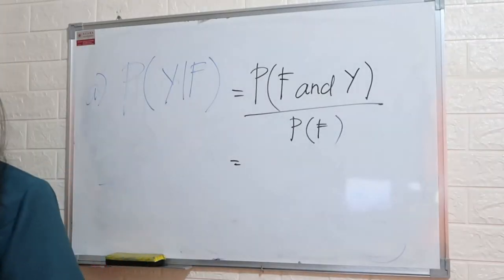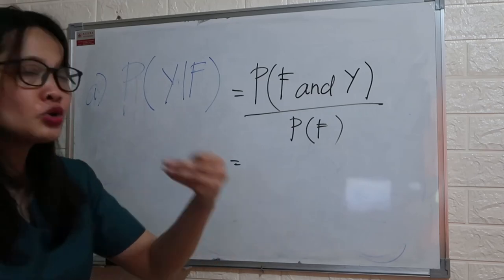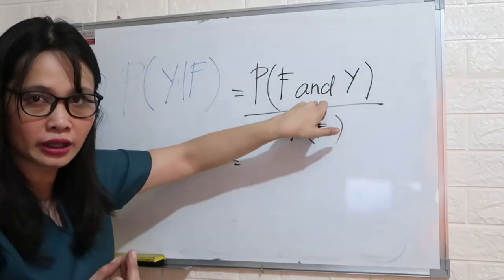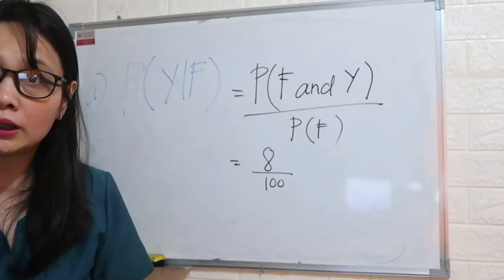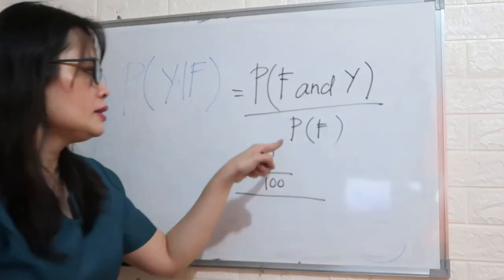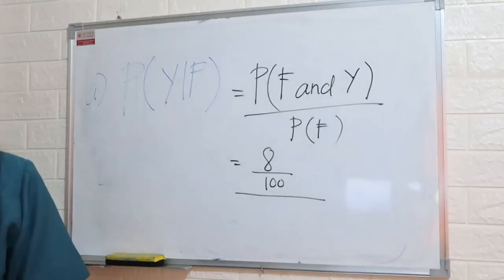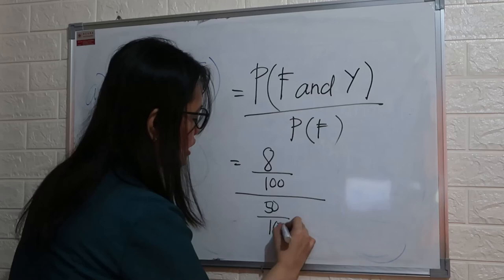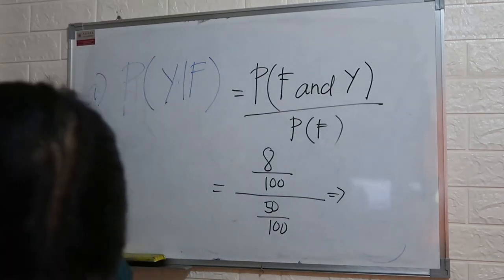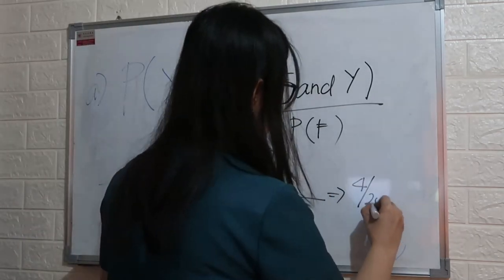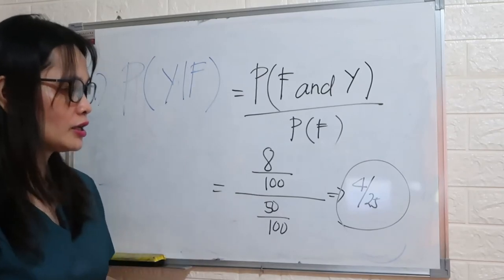There are 8 females who said yes out of 100 people, over the probability of female — 50 out of 100. Simplifying, 8 over 100 divided by 50 over 100, the answer is 4 over 25.